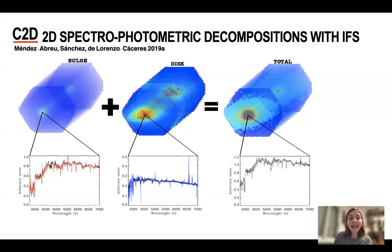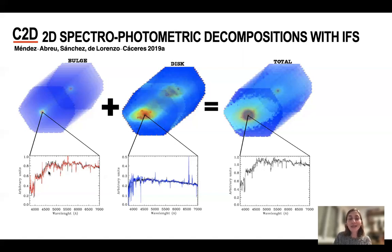And the color lines — red and blue — show the spectra provided by C2D for each component. And you can see the goodness of C2D's performance by comparing these two lines.